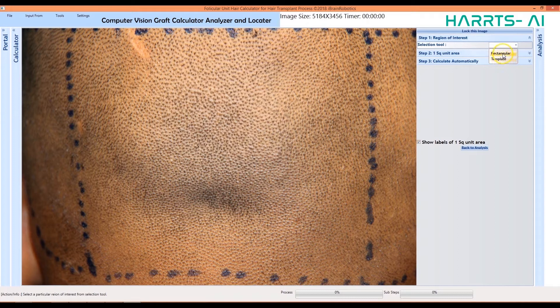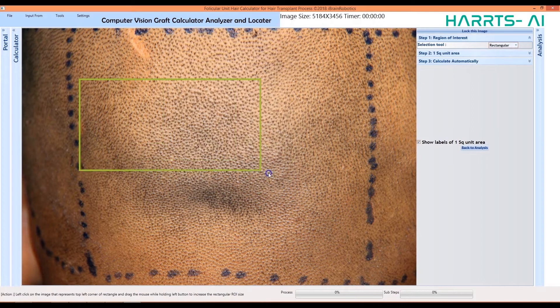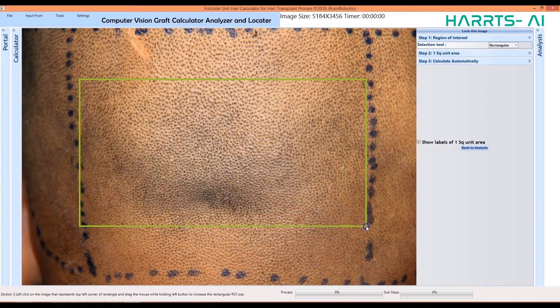For using the rectangular tool, simply click on the upper left corner of your area of interest, and drag the cursor downwards, till you select the entire area of interest.